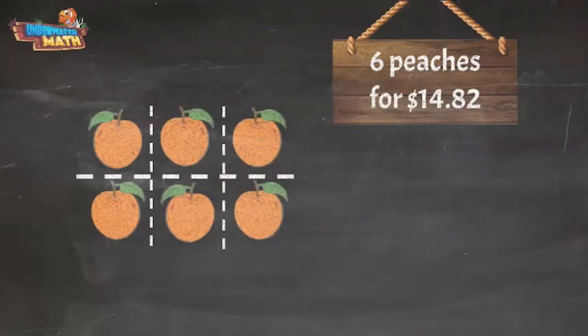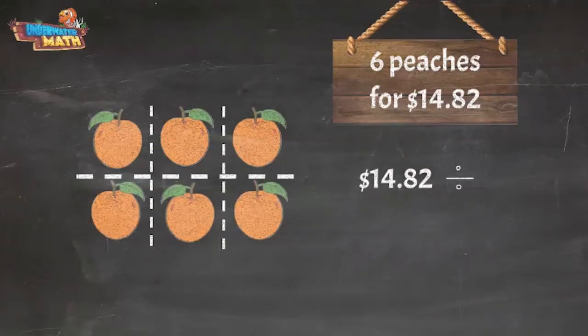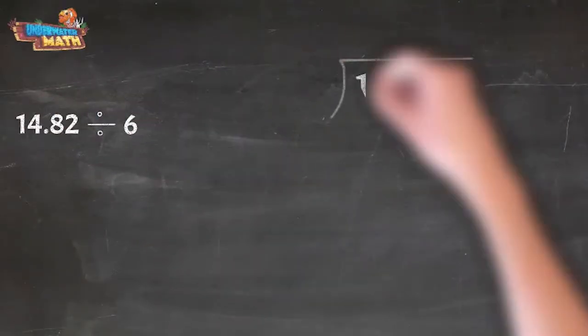So our division problem is 14.82 divided by 6. Decimal division is just like regular long division except we have a decimal point in the dividend to deal with.